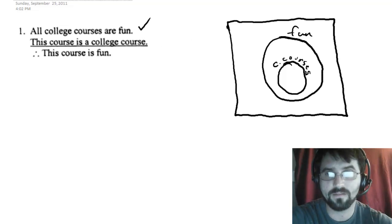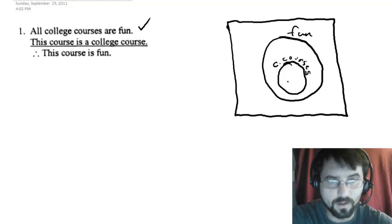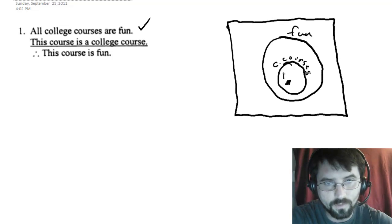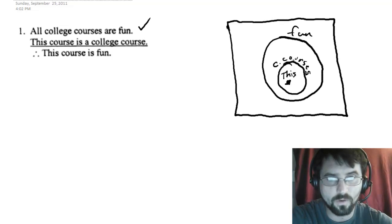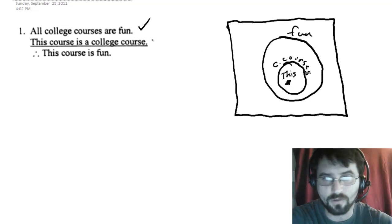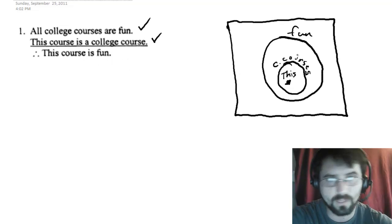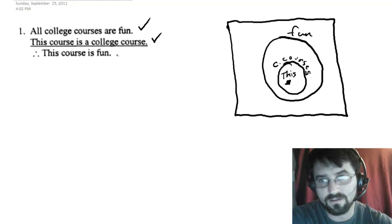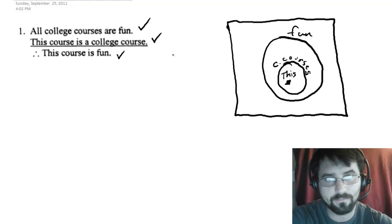Premise two says this course is a college course. This little thing here will represent this course. I've drawn the second premise. Is the conclusion necessarily part of the picture? Is this course fun? Yes it is, and there is no other way to draw it. So this is a valid argument.